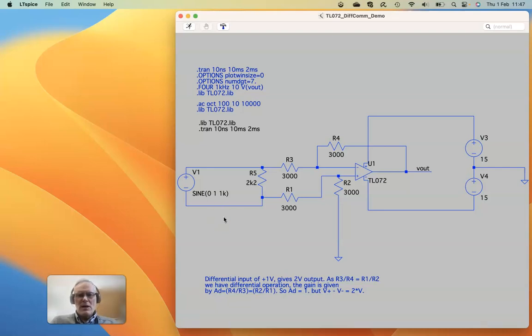One common mistake is as follows. We've placed a sinusoid voltage source here, 1V, 1KHz, and we've connected the positive to one input of the differential amp and negative to the other input of the differential amp.